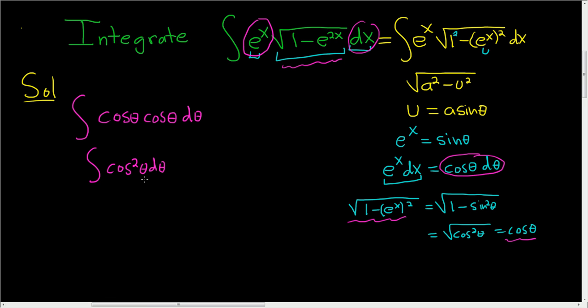And then we have to use an identity, so this is equal to the integral of 1 half, 1 plus cosine 2 theta. And then we still have the d theta. Let's break this up. This is the integral of 1 half d theta, plus, and then we have the integral of 1 half cosine 2 theta, and then we still have the d theta.